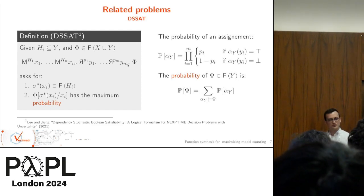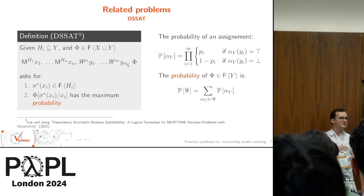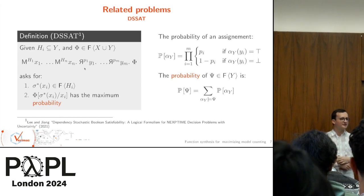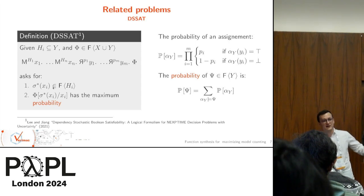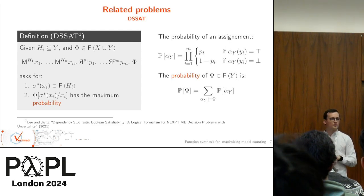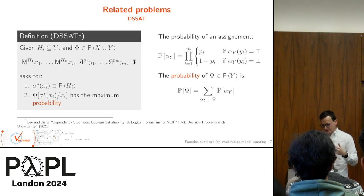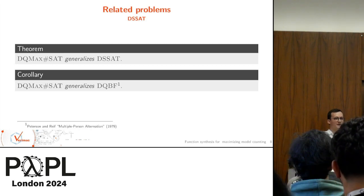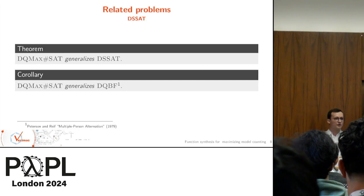The next problem that we generalize is called dependency quantified stochastic boolean satisfiability, which was introduced recently in 2021. Basically, you remove the existential variables that removes the projected model counting part, and we add biases for counting. We still have to compute a substitution compatible with the dependencies, but we want to maximize the probability. The nice thing is that our problem actually generalizes the DSSat problem. The reduction goes by encoding the weights as both counting variables and existential variables. As a corollary, we generalize the fairly well-known DQBF problem. We have a direct translation from our problem to DQBF, but we get the reduction from DSSat to DQBF also.